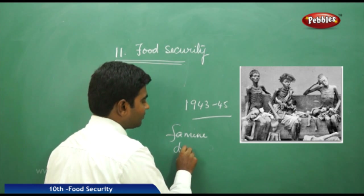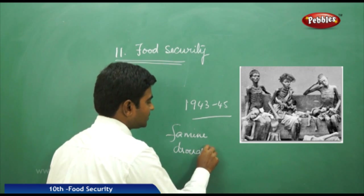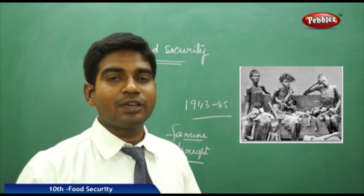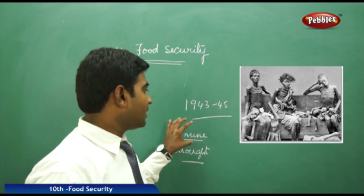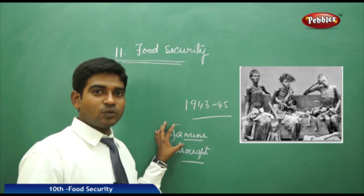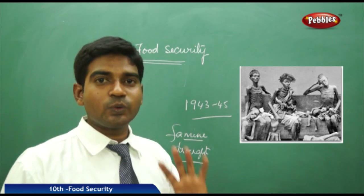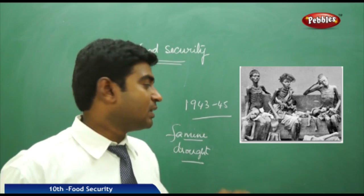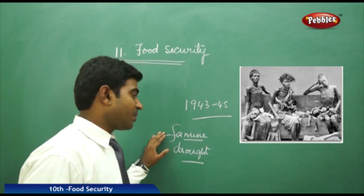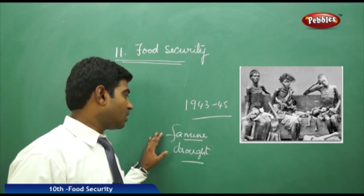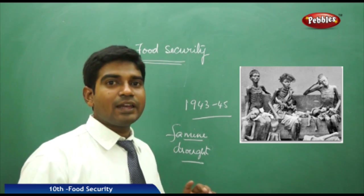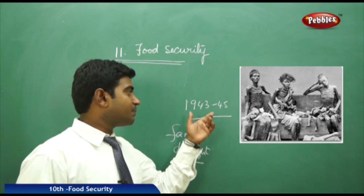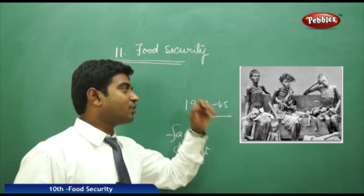Famine means when, for a long period of time — like five or ten years — crops fail to fulfill the needs of the people, especially for food like rice or wheat. When this failure is at a larger scale, it is called a famine. When it is at a smaller, seasonal scale, it is called a drought. We have an example from 1943 to 1945 to illustrate this.